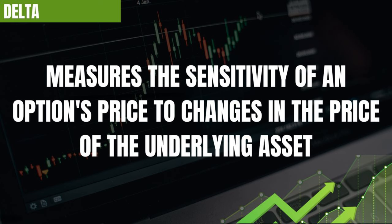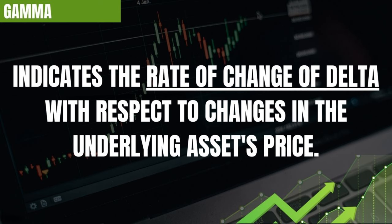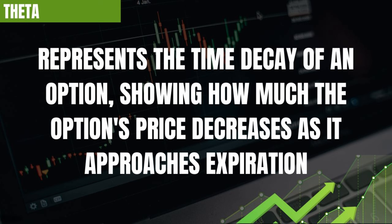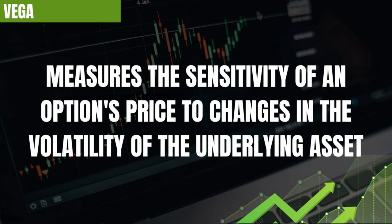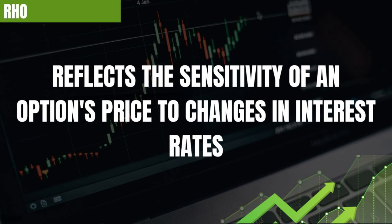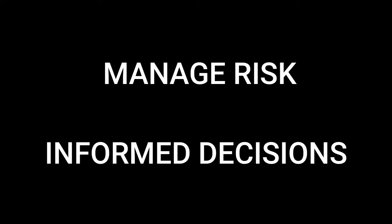Let's touch on the Greeks — these are risk metrics that provide insights into how different factors affect the price of an options contract. Delta measures the sensitivity of an option's price to changes in the price of the underlying asset. Gamma indicates the rate of change of Delta with respect to changes in the underlying asset's price. Theta represents the time decay of an option and shows how much the option's price decreases as it approaches expiration. Vega measures the sensitivity of an option's price to changes in the volatility of the underlying asset. Rho reflects the sensitivity of an option's price to changes in interest rates. Understanding these metrics can help you manage risk and make more informed trading decisions.